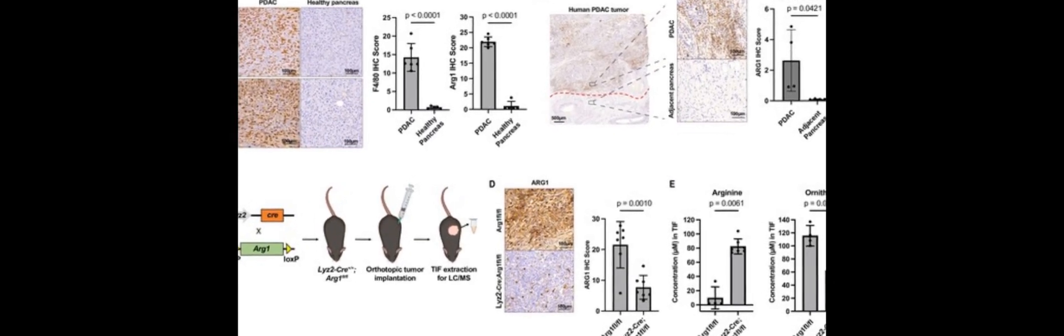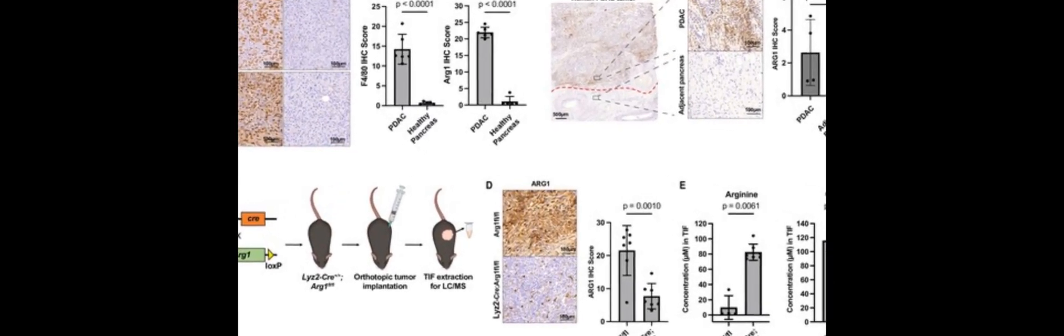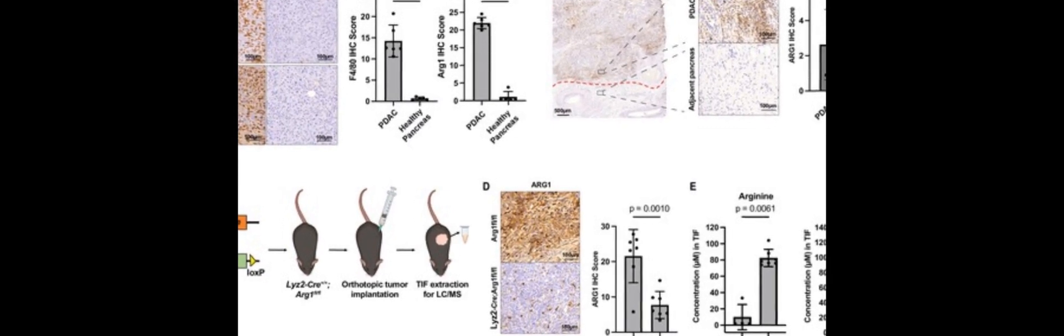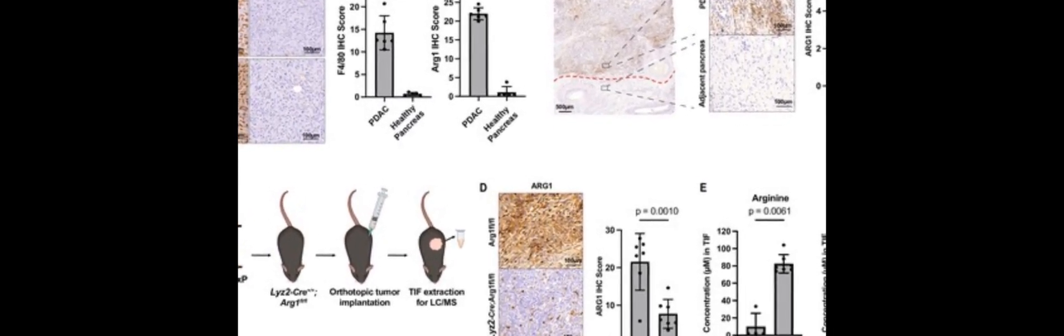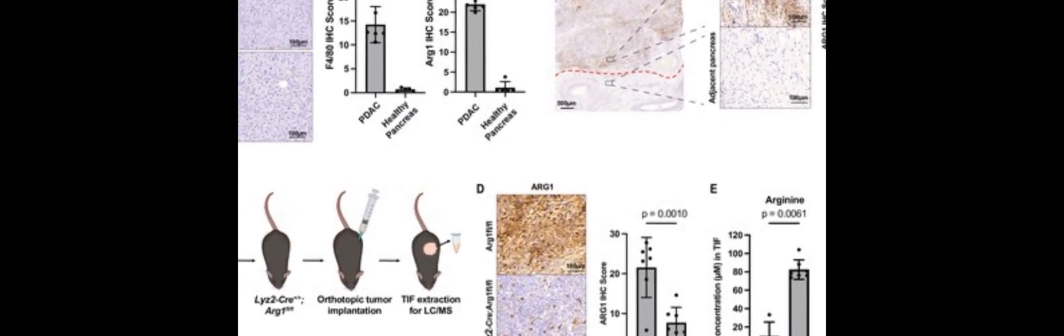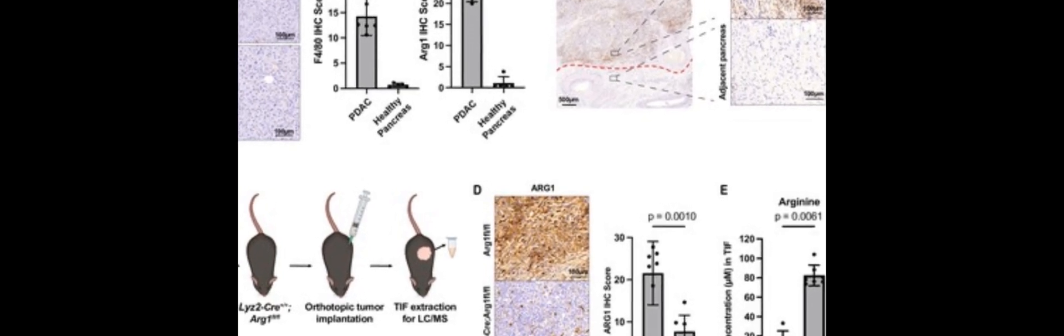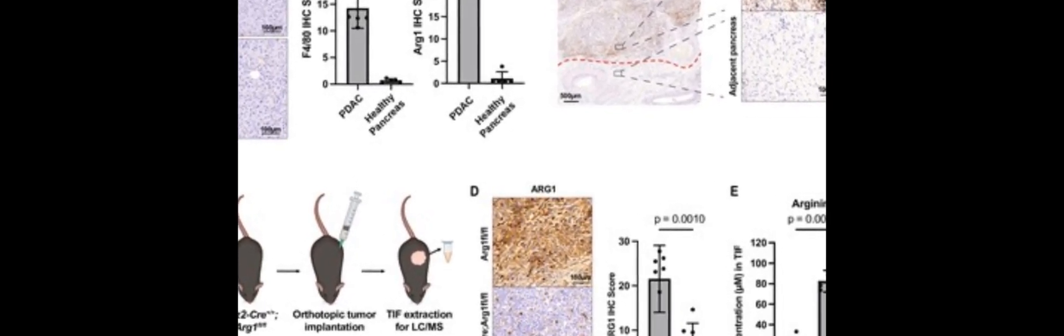The tumor microenvironment has been shown to be a key factor in the development and progression of cancer. In particular, the availability of certain nutrients can affect the metabolism of cancer cells, leading to distinct metabolic profiles and behaviors.